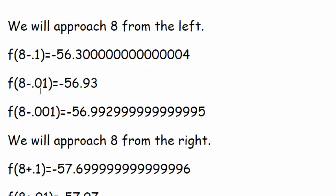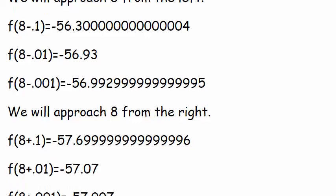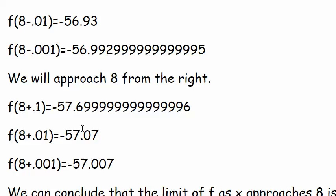And then 7.99, 7.999. So as you can see, 56.3, 56.9, 56.99. And you can kind of tell it's heading towards negative 57.